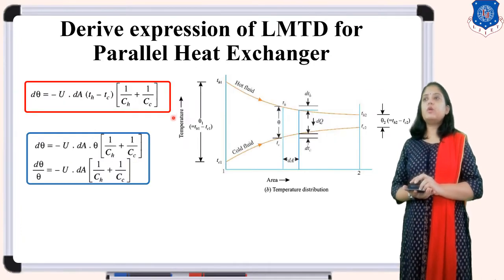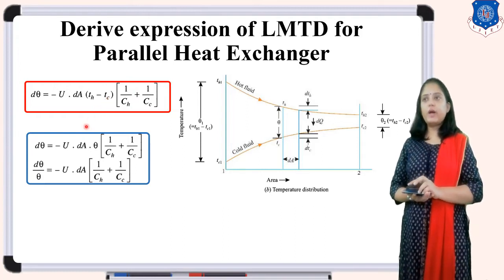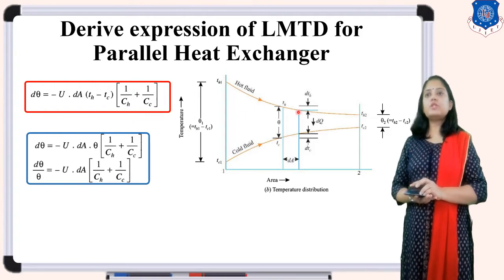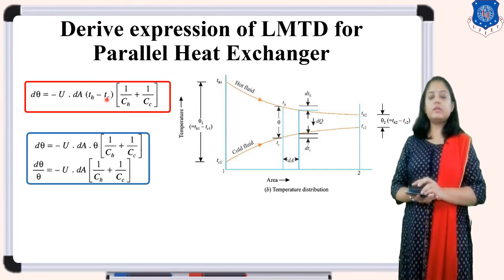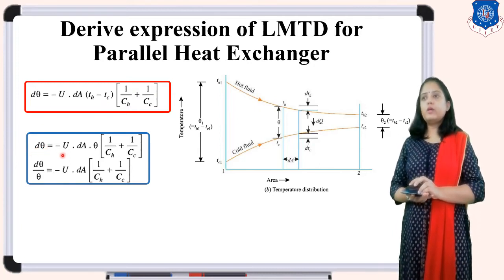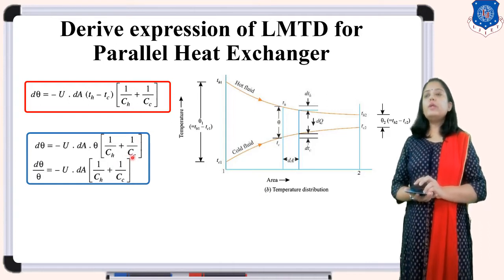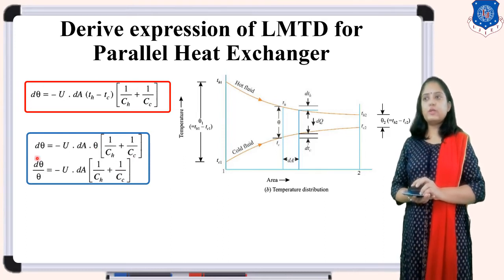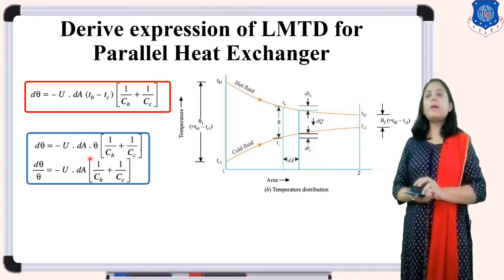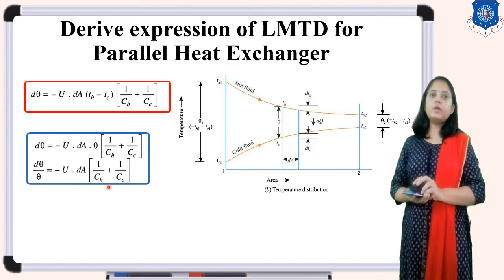Since TH - TC = theta, substituting: D(theta) = -U·DA·theta·(1/CH + 1/CC). Dividing both sides by theta: D(theta)/theta = -U·DA·(1/CH + 1/CC).